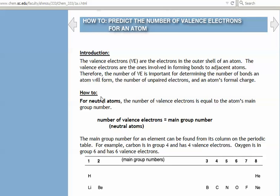So let's look down at this how-to guide. For neutral atoms, remember atoms are electrically neutral, which means the number of protons is equal to the number of electrons.